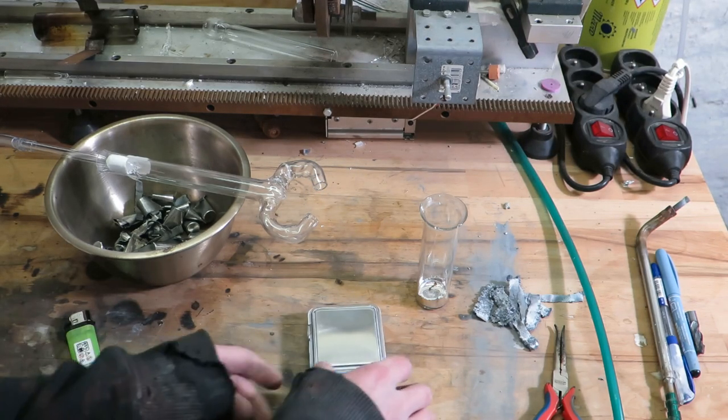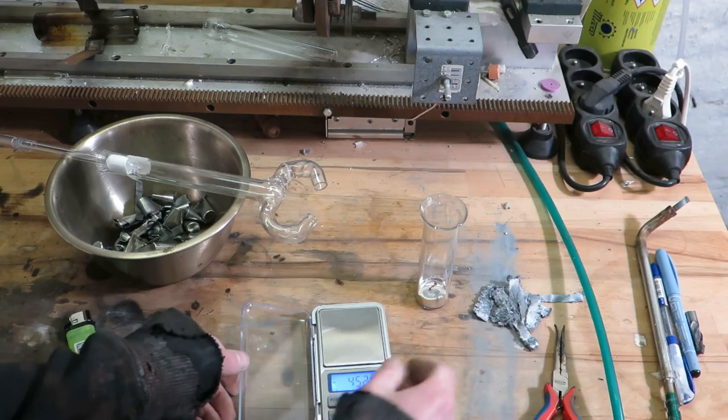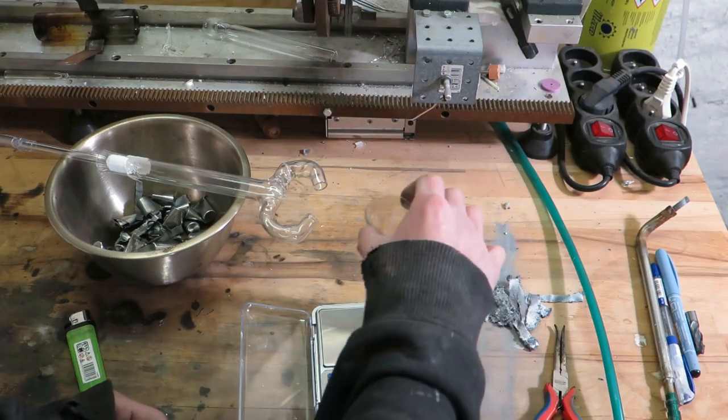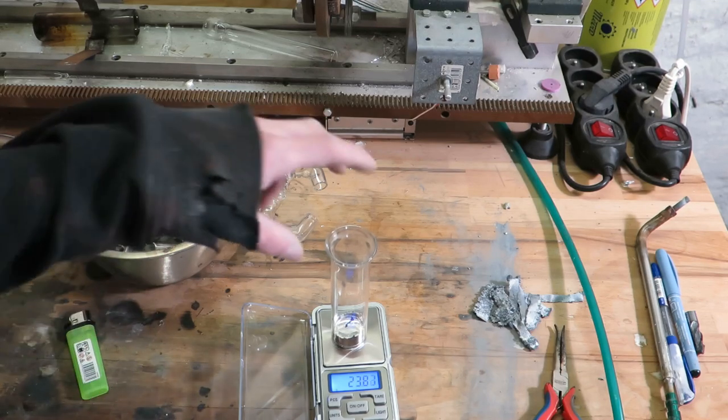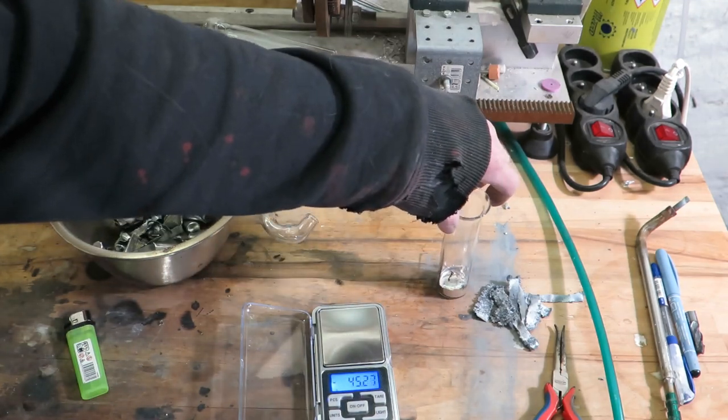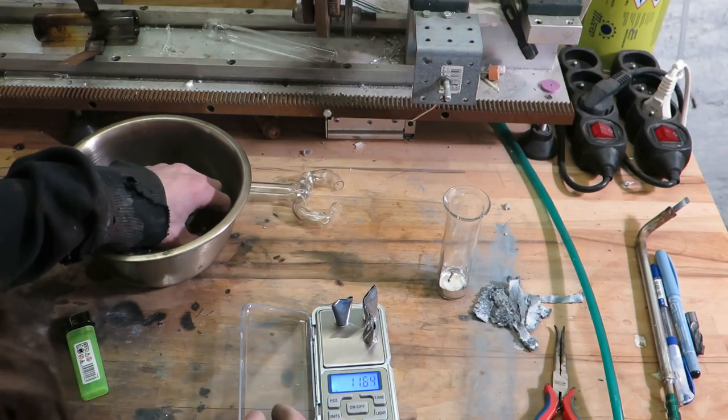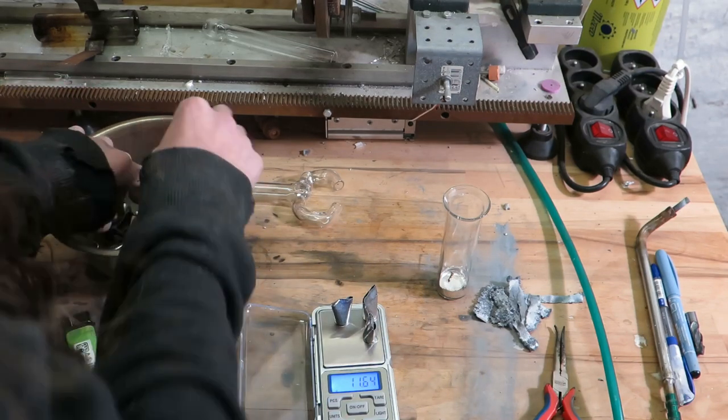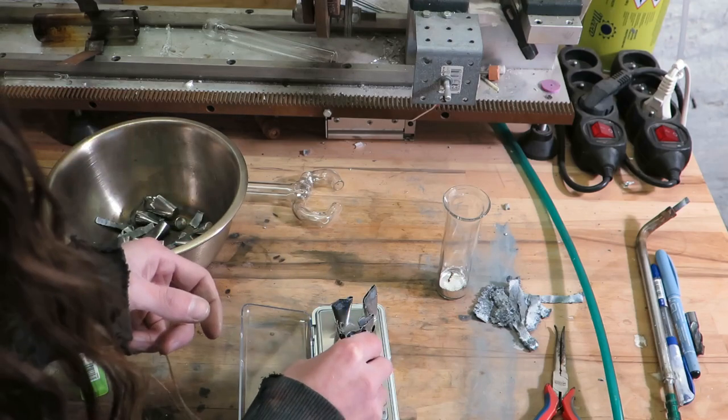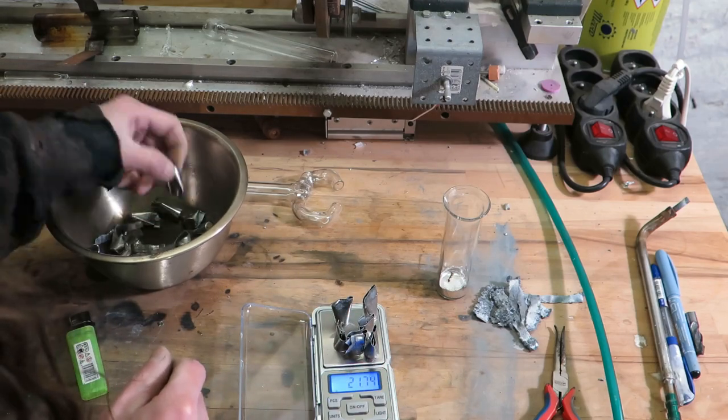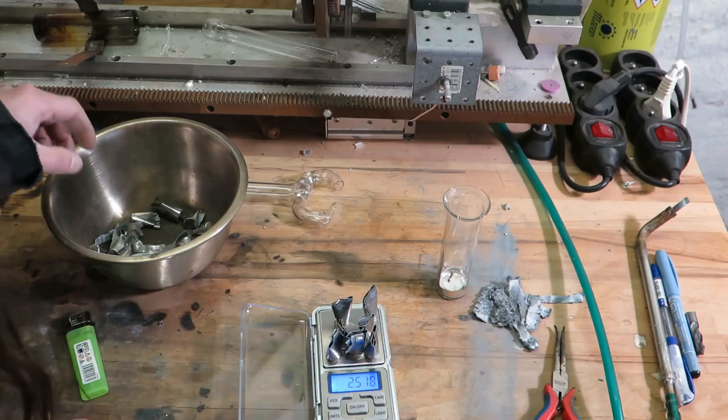There will be very little difference really, and I am going to eyeball the ratio anyway, so it doesn't really matter. But this way it is scientific, right? Okay, so now I am going to use about the same amount of zinc. So that is about 25 grams, and the more zinc you use, the higher the melting point will be, which actually may be very well what you want.